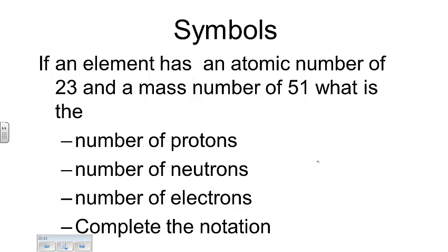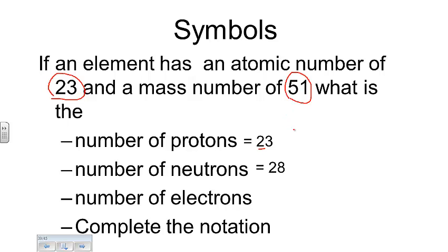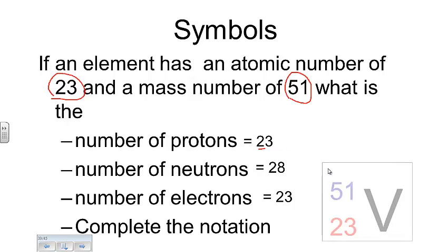You can also work the other way using a periodic table. If we have an element with an atomic number of 23 and a mass number of 51, the number of protons must be 23. Subtracting: 51 minus 23 is 28 neutrons. The number of electrons, for an atom, would be the same as the number of protons — 23. You'd find the element with atomic number 23 on your periodic table, which is vanadium.